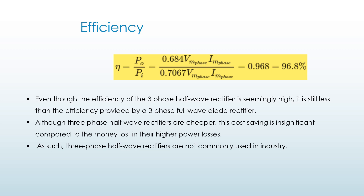Even though the efficiency of the 3-phase half wave rectifier is seemingly high, it is still less than the efficiency provided by a 3-phase full wave diode rectifier. Although 3-phase half wave rectifiers are cheaper, this cost saving is insignificant compared to the money lost in their higher power losses. As such, 3-phase half wave rectifiers are not commonly used in the industry.